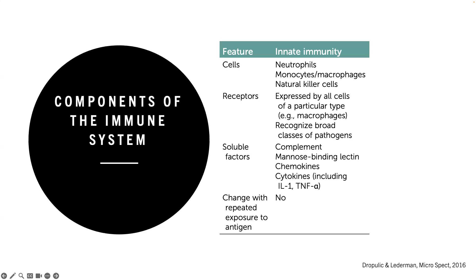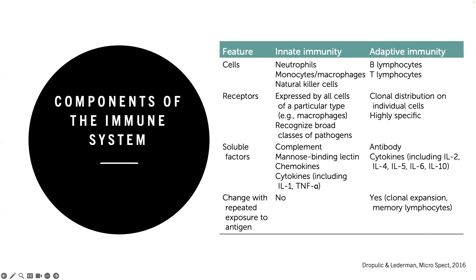Innate immunity is generally made up of phagocytes and natural killer cells. The receptors recognize broad classes of pathogens — either DAMPs or PAMPs — and soluble factors include complement, chemokines, and cytokines. Some cytokines bridge innate and adaptive immune responses, and the innate system does not change with repeated exposure to antigens. Adaptive immunity is made up of B and T cells with clonal distribution, highly specific receptors that proliferate in response to particular antigenic stimulation, with antibody as a key soluble factor.